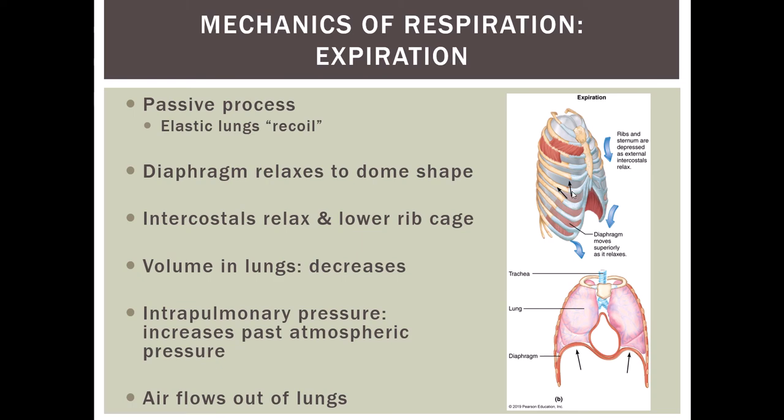This decreases the volume of the thoracic cavity and the volume of the lungs. Since the volume is decreasing, the pressure increases to the point where it is higher than atmospheric pressure. So the gases flow down the pressure gradient until the pressures are equalized, and air flows out of the lungs and into the external environment.